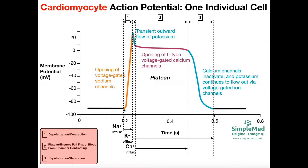The cardiomyocytes have a resting membrane potential around negative 90 millivolts. In order to get the initial depolarization, we have to have the opening of voltage-gated sodium channels. Through a mechanism we'll talk about in the next video, those voltage-gated sodium channels open and the membrane potential skyrockets to about positive 20 or positive 30 millivolts.